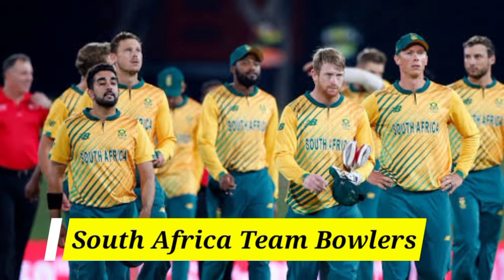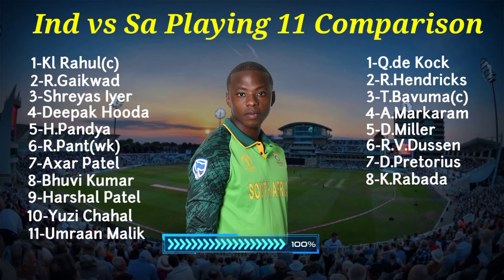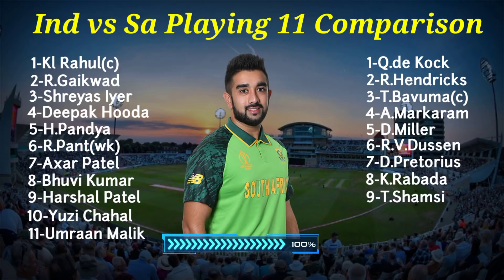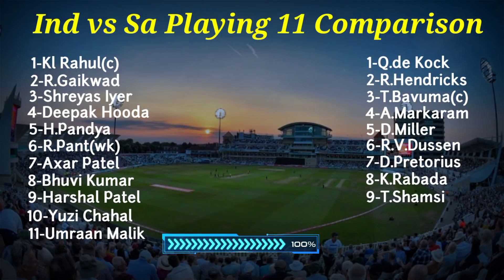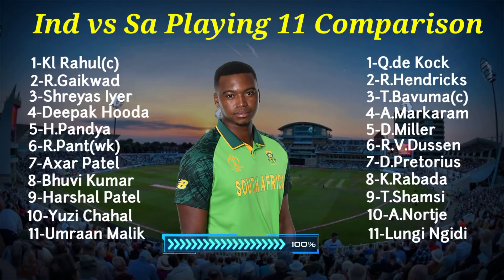South Africa Team Bowlers: Number 8 Kagiso Rabada, Right Arm Fast Bowler. Number 9 Tabraiz Shamsi, Left Arm Leg Spinner. Number 10 Anrich Nortje, Right Arm Fast Bowler. Number 11 Lungi Ngidi, Right Arm Fast Bowler.